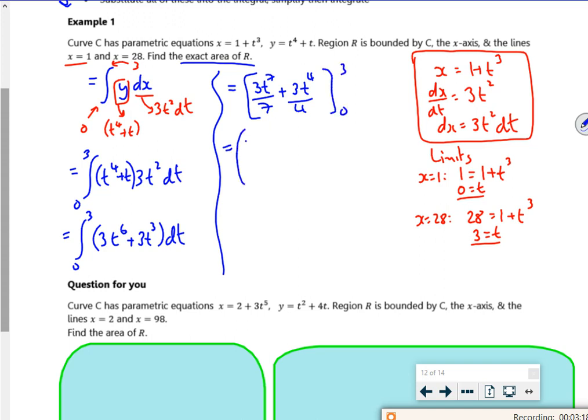So I've got 3 lots of 3 to the 7 over 7 plus 3 lots of 3 to the 4 over 4. Minus, in this case, if I stick 0 in you get 0 out, we don't need to worry about that. And it'll give me, according to the completed part...